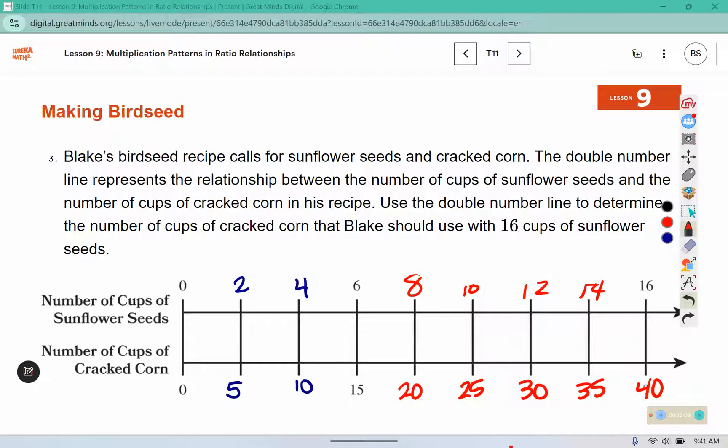So determine the number of cups of cracked corn that Blake should use with 16 cups of sunflower seeds. He should use 40 cups.